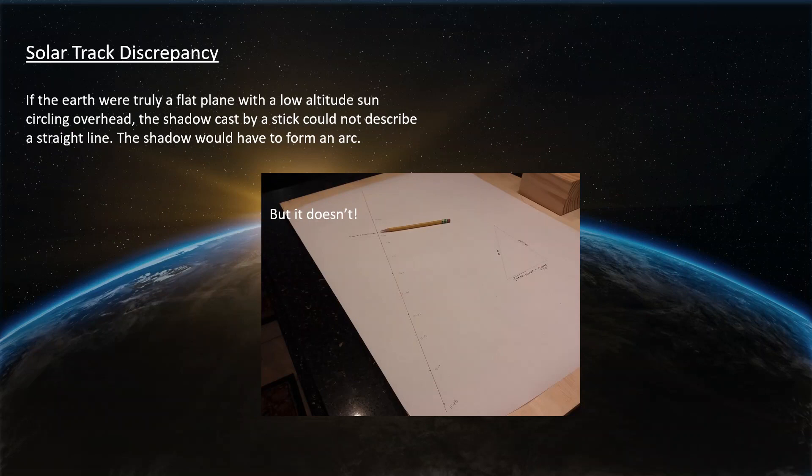There's also a solar track discrepancy. If the sun was truly at a low altitude and orbiting over the earth in a circle, the shadow it cast could not form anything other than an arc. It would have to be an arc, not a straight line. But that's not what happens. You get a perfectly straight line. You can see the points that I marked throughout the day, and you can do this yourself any day of the week. Over about a three hour period there, you see those points form a perfectly straight line.